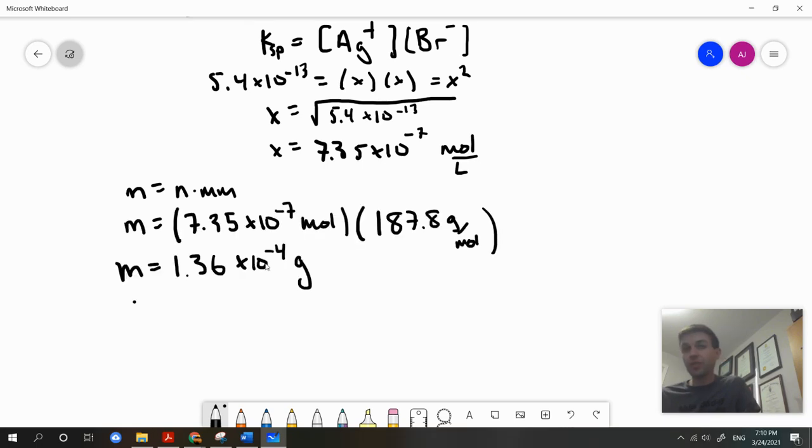My concentration here is 1.36 times 10 to the negative 4 grams in one liter. Now I need to find out the amount that can be dissolved in 100 milliliters, so I'll convert liters to milliliters by multiplying it by a common factor.